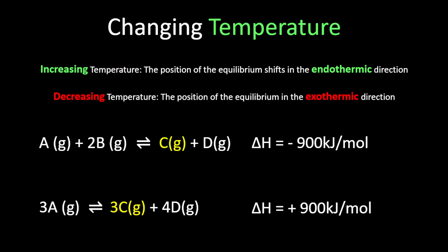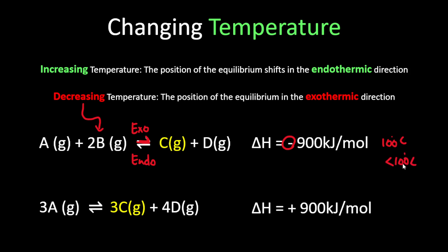There are two pieces of information you need to remember. Increasing the temperature will shift your equilibrium in the endothermic direction. And decreasing temperature will shift it to the exothermic direction. So right now for the first equation, should I increase or decrease my temperature to get product C? I should look at my sign here. Since it is negative, my forward reaction is exothermic and my backward reaction is endothermic. Simply put, I need to decrease the temperature for the exothermic reaction to be favored and more product C will form.